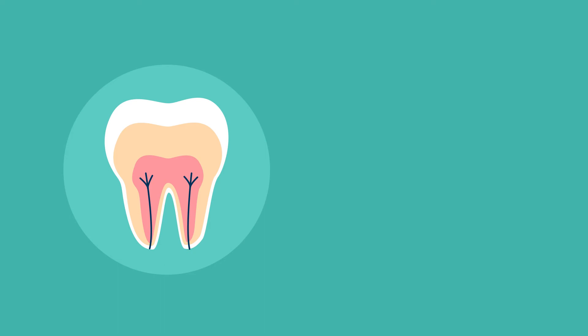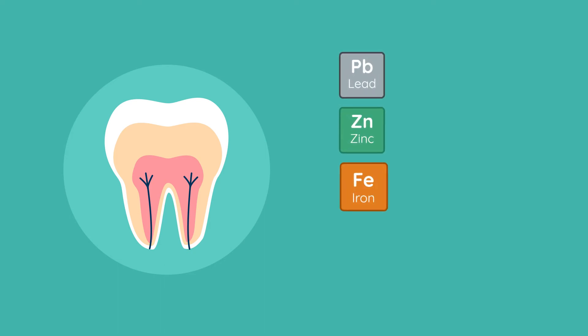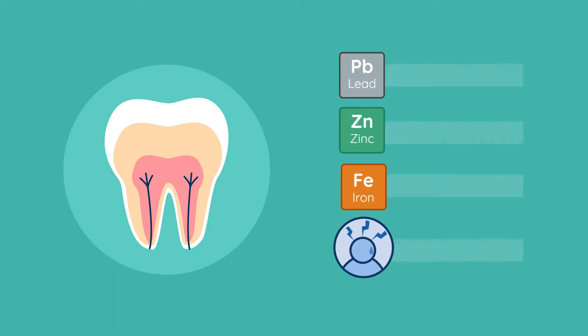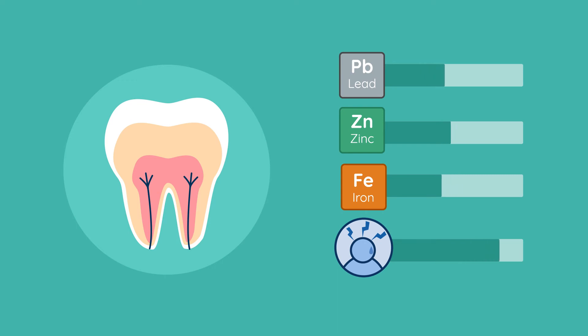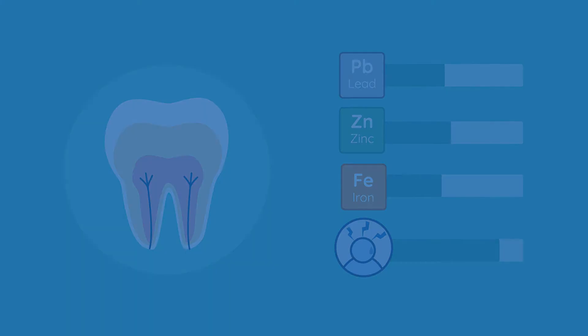When baby teeth fall out, they can provide a record of what the child has been exposed to. For example, data analysis can determine the levels of stress hormones and heavy metals present.